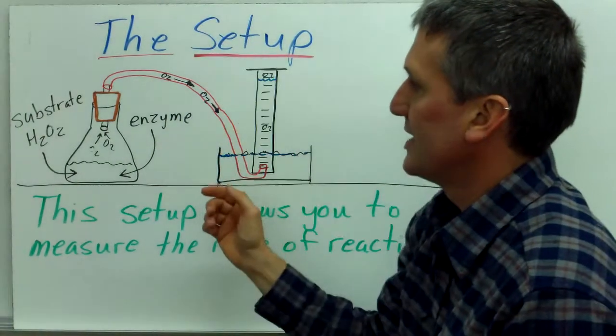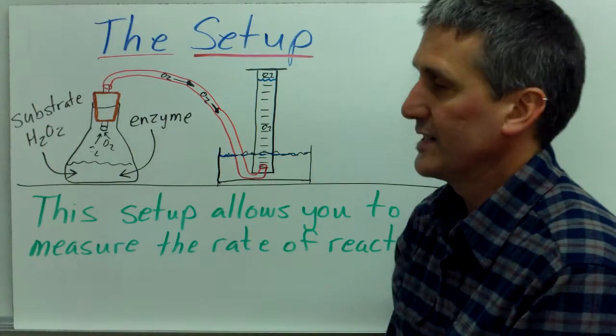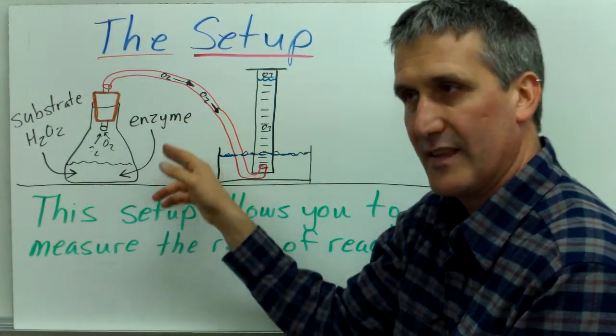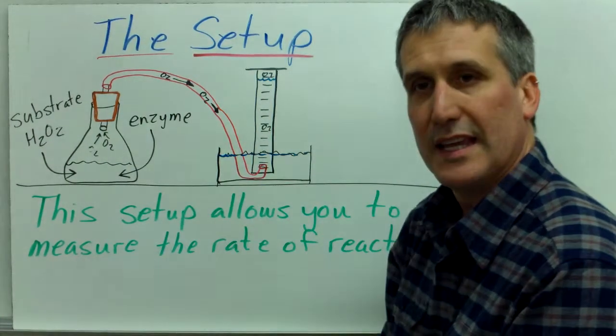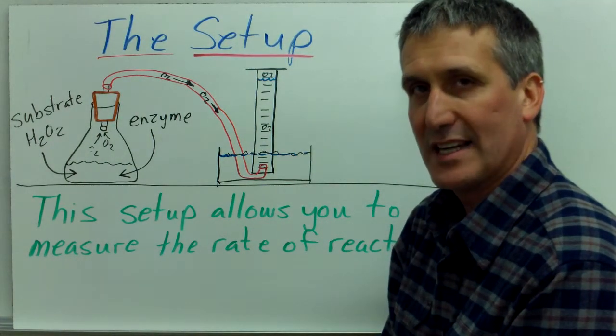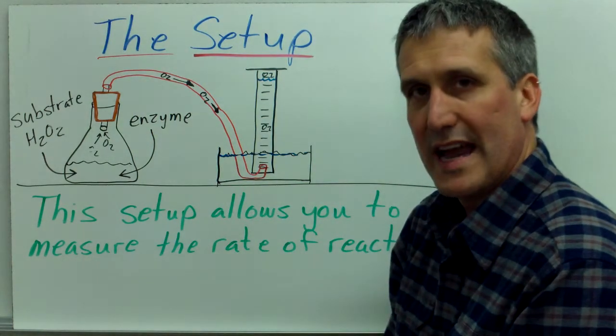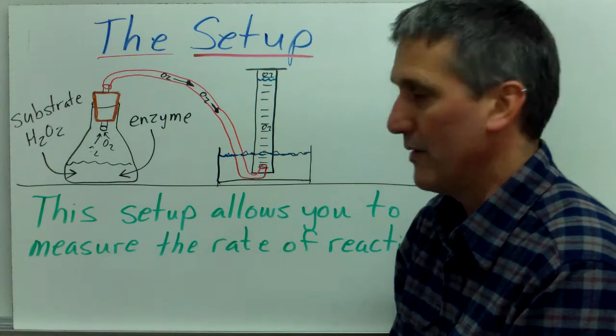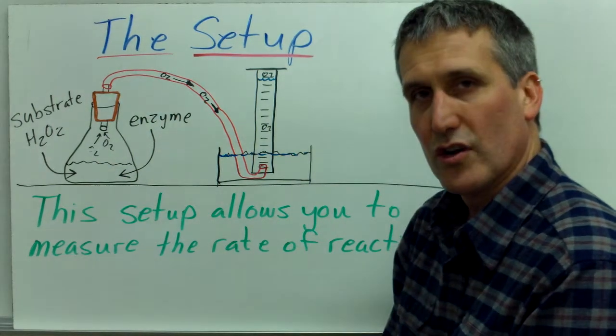Now, here's the setup. We have a reaction chamber, an Erlenmeyer flask reaction chamber here, and we put the hydrogen peroxide and the enzyme right before we're ready to go, and we quickly put the cork on top of our reaction chamber, and we gently agitate it for 90 seconds. During that 90 seconds, we will be collecting data, which we'll talk about next. But you'll notice that when this reaction occurs, if you remember...